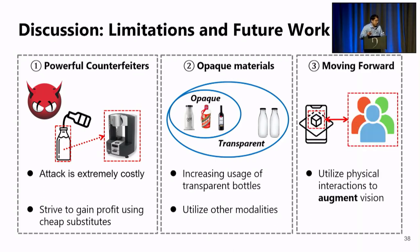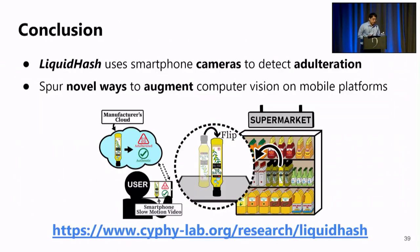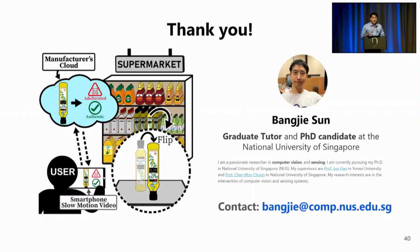Moving forward, we want to demonstrate Liquid Hash and use this to inspire the research community to have more novel ideas in utilizing physical interactions to augment computer vision, just like Liquid Hash. In conclusion, Liquid Hash uses smartphone cameras to detect adulteration, and we want to spur novel ways to augment computer vision on mobile platforms. You can visit our website for more details. That's the end of my talk — please feel free to join our poster session this afternoon to interact with us more. Thank you.